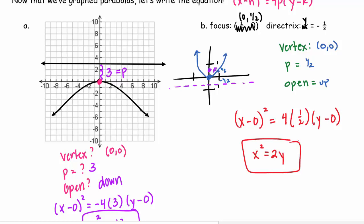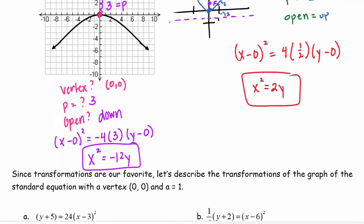So that's how you write the equation. So again, vertex, p, and which way it opens is the information that you need to write the equation.